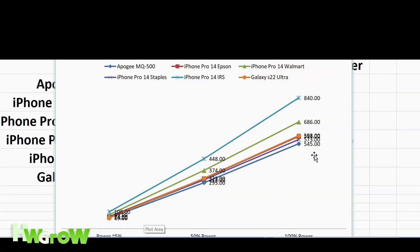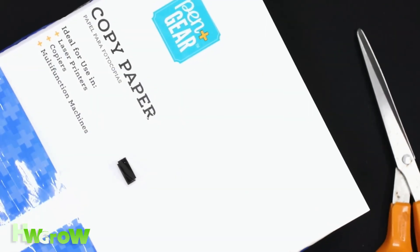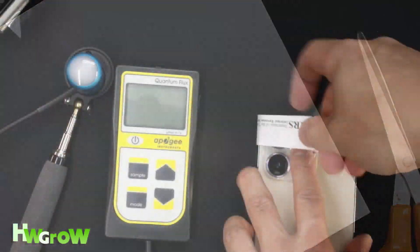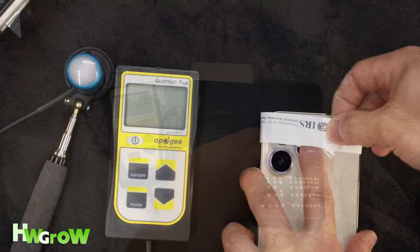Apogee has the lowest readings. Next after that is the iPhone with Staples paper, and then kind of even is the Epson and the Galaxy Ultra. You could see that the Walmart and the IRS paper is off, so I definitely wouldn't recommend using that unless you calibrate. I find that the cheaper the paper is, the thinner, hence the higher readings.